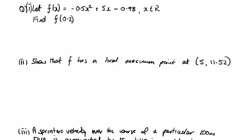This question is about a sprinter and his velocity — it came with a picture of what looks like an Olympic final. For part A, we need f(0.2). So f(0.2) = −0.5 × (0.2)² + 5 × (0.2) − 0.98. Using the calculator, that gives 0.